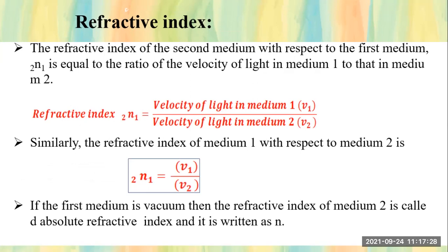If the first medium is vacuum, then the refractive index of medium 2 is called the absolute refractive index, and it is written simply as N. So for absolute refractive index, when the reference medium is vacuum, the notation simplifies to just N.